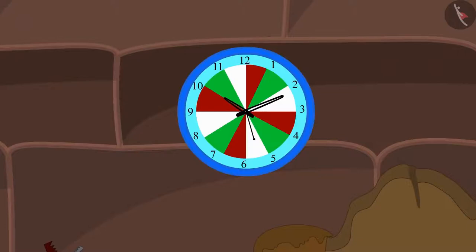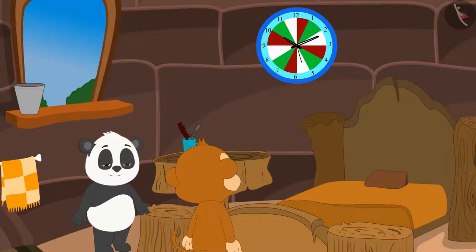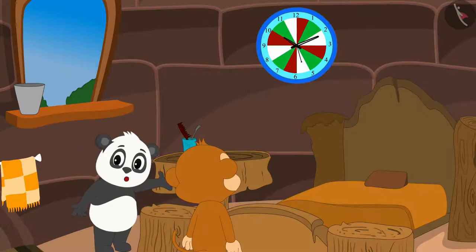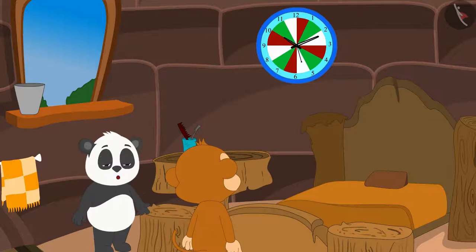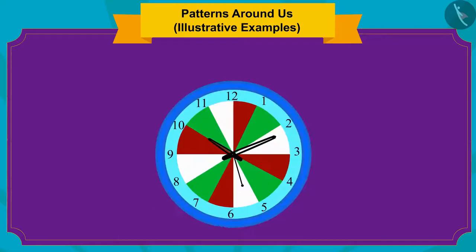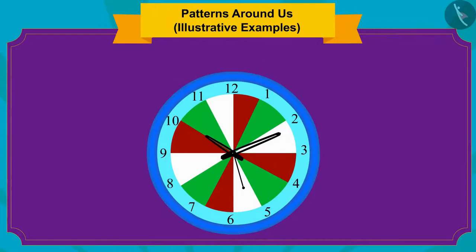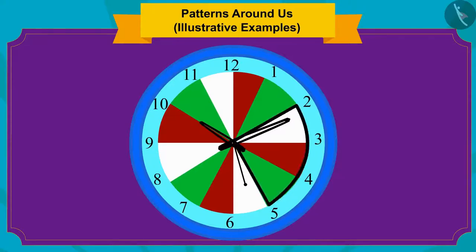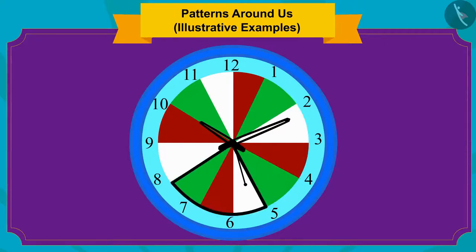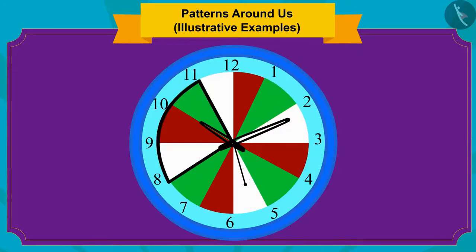Golu looked at the clock hanging on his wall and immediately pointed at it to Babban and said, 'Look, Babban, this is a kind of pattern in my watch as well.' Children, can you also find the rule of the pattern made in Golu's clock? Here, a group of white, red, and green strips are repeated in order to form a pattern.